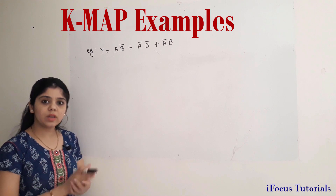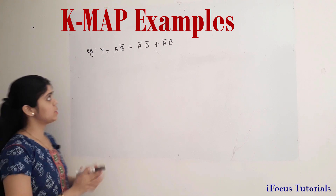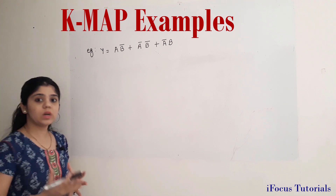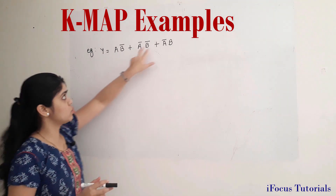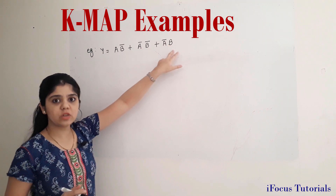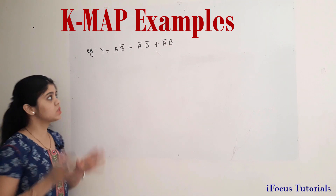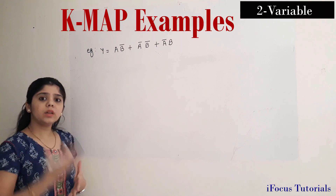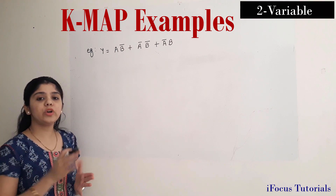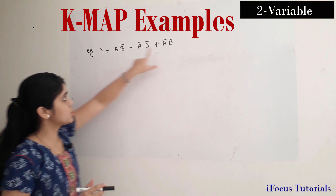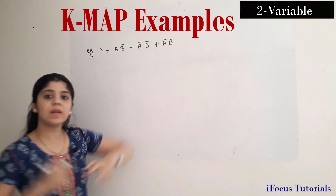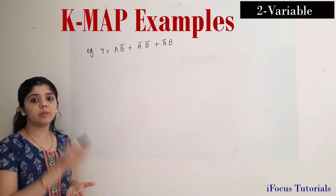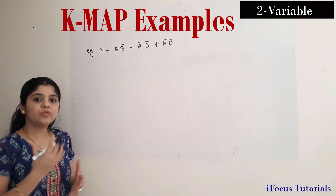Now let's start with the KMAP example. I have taken an expression here. As you can see, there are two alphabets used in this expression. So according to the rules, I will require a two variable KMAP here. Another important point to note is that the given expression is an SOP expression, so I need to fill a number of ones in my KMAP.